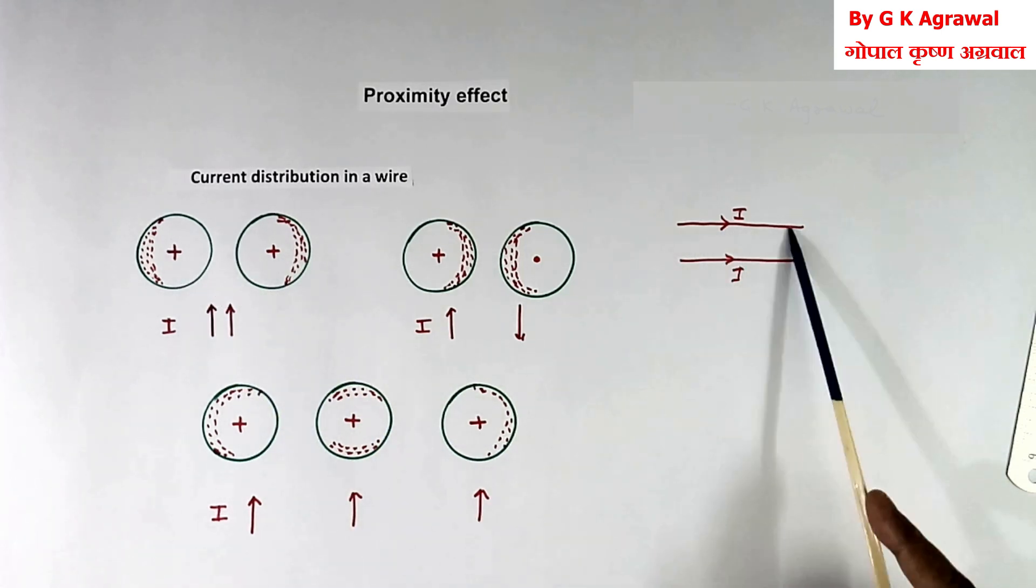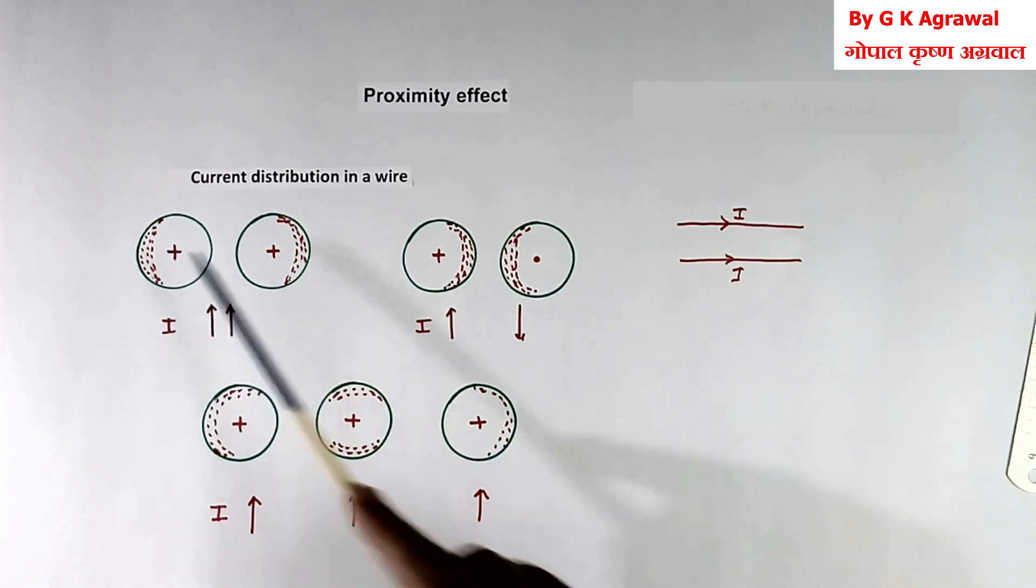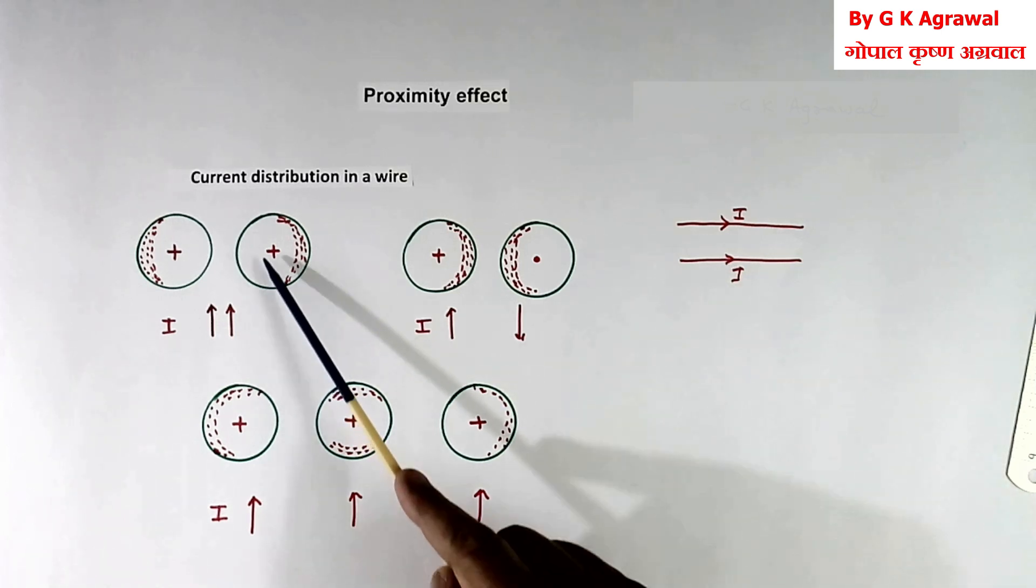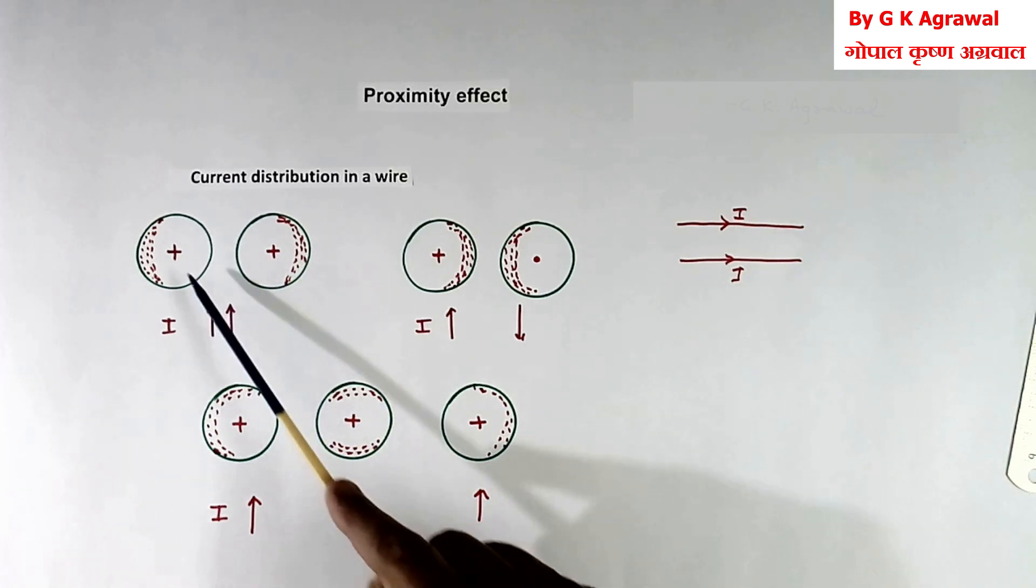Now suppose this wire is this, this wire is this. And current flowing in both the wires in the same direction. I have shown in the same direction, cross.